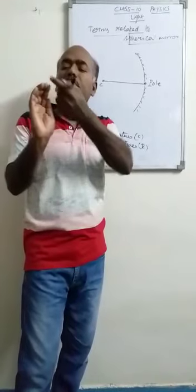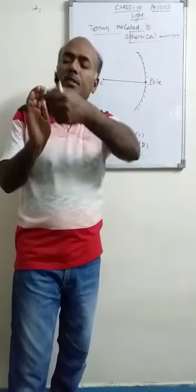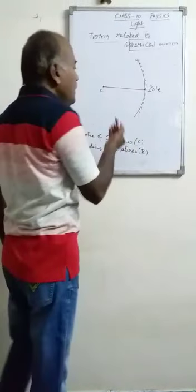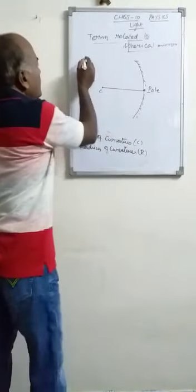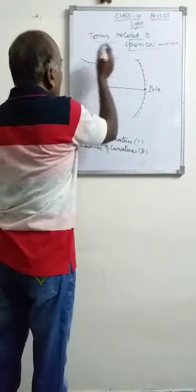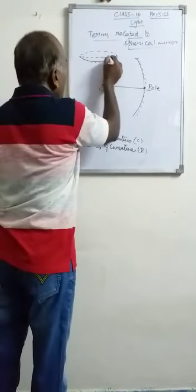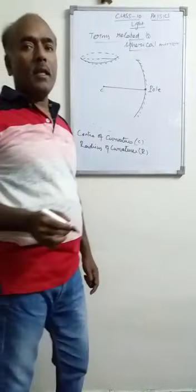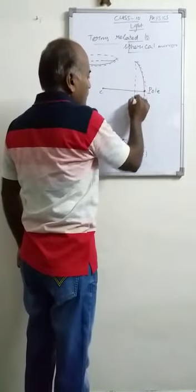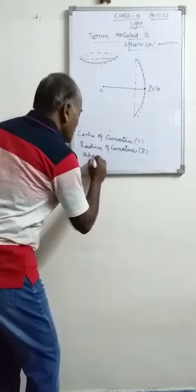It forms a spherical shape like this. And its outer edge, if we see the outer edge, it forms a circle. This is the mirror — concave mirror — and its outer edge will be seen like this, circular. The diameter of that outer edge of that concave mirror is known as aperture.